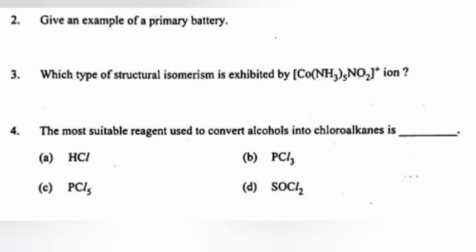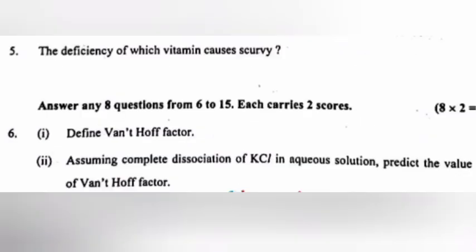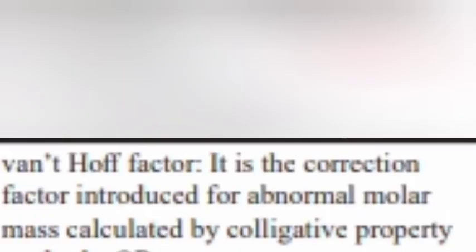Answer to Q3: Linkage isomerism. Question 4: The most suitable reagent to convert alcohols into chloroalkanes — answer: D, SOCl₂. Question 5: The deficiency of which vitamin causes scurvy — answer: Vitamin C.